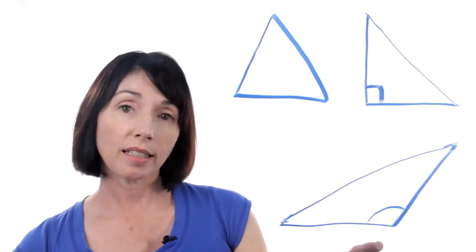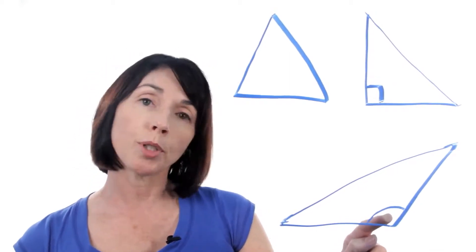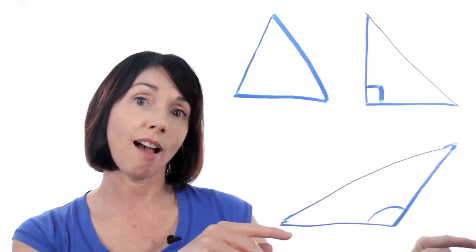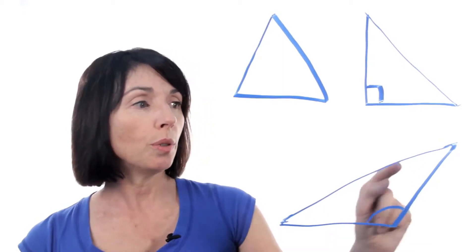If a triangle has one interior angle that's greater than 90 degrees but less than 180 degrees, that's called an obtuse triangle. That's this one down here. This is an obtuse angle. It's more than 90 degrees but it's less than 180 degrees. 180 degrees is a straight line. So this obtuse triangle has one obtuse angle and two acute angles.